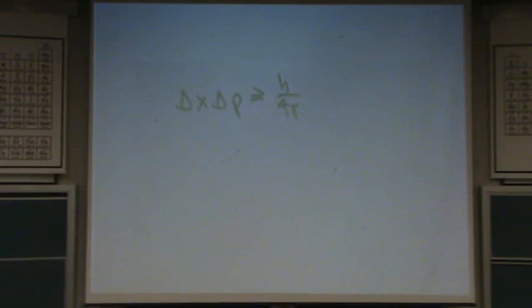For practical purposes, I would always write it as follows: change in x times the mass times the velocity is equal to h over 4 pi, just change it to an equal sign.